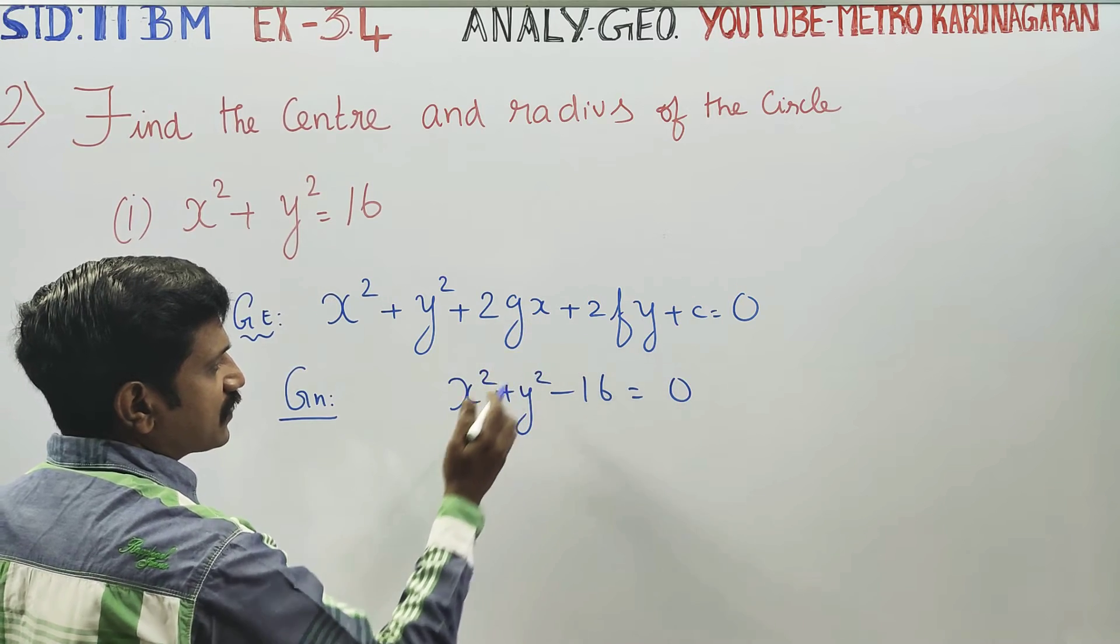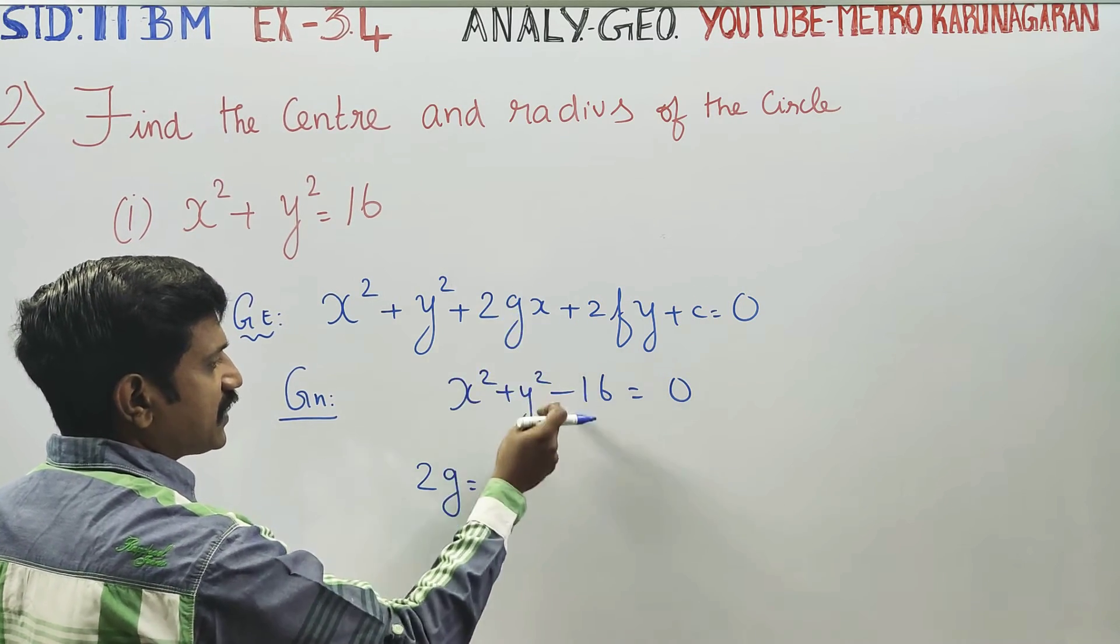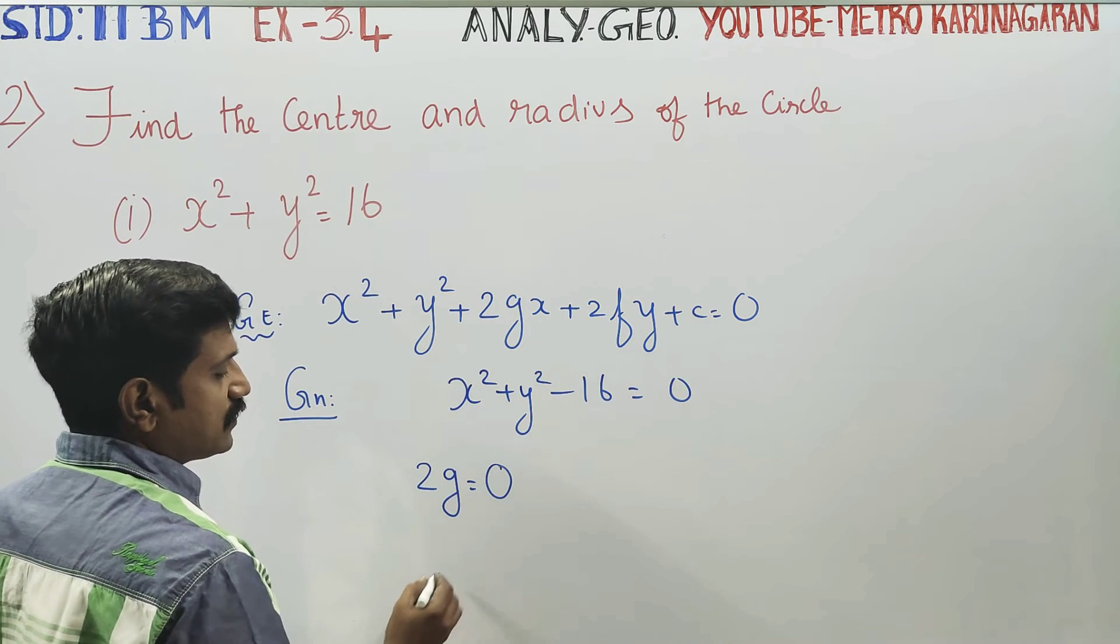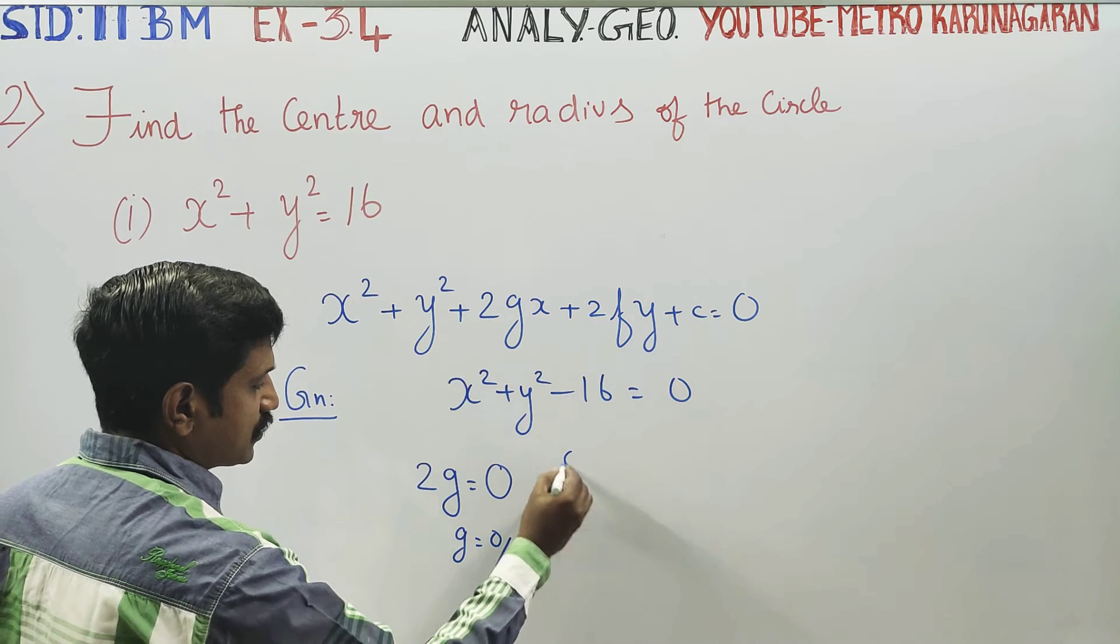Then x coefficient, the number sum is equal to 2g. x coefficient is 0. Now, g is equal to 0 by 2 is 0.